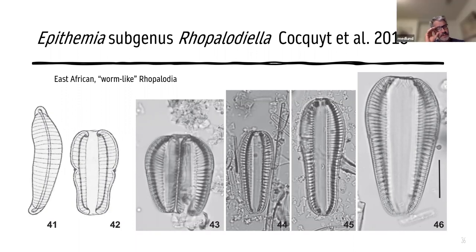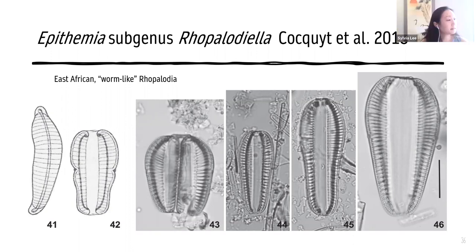Was there, other than sub-genus Ropalodiella and sub-genus Epithemia, were there other sub-genera suggested within the genus Epithemia? Not that I recall reading, but I may need to look at that paper again to check.